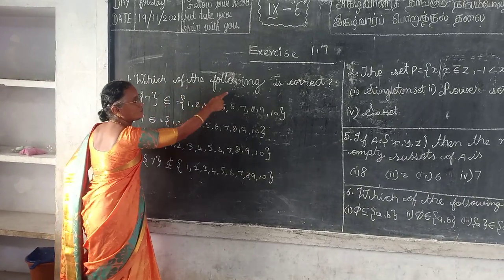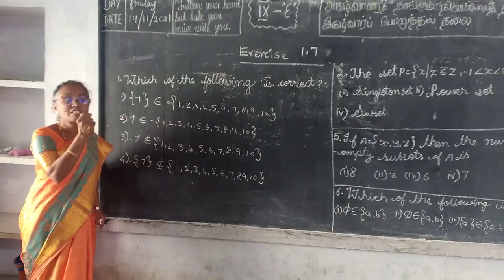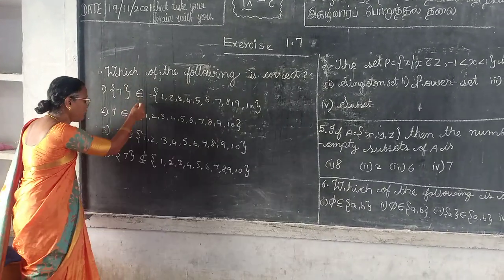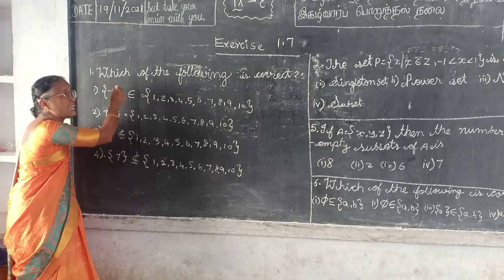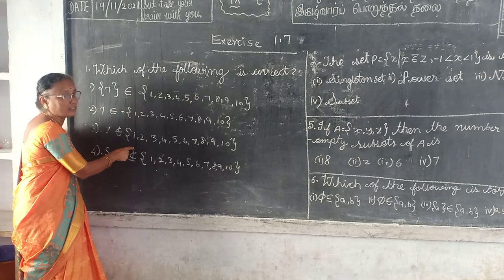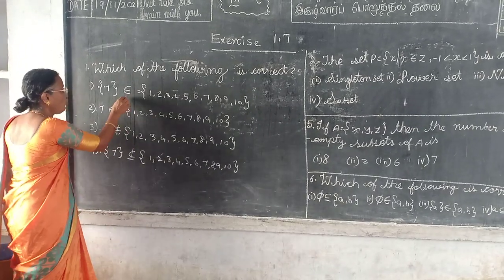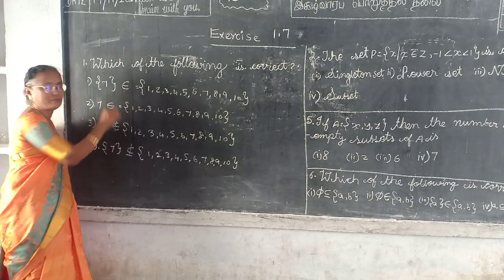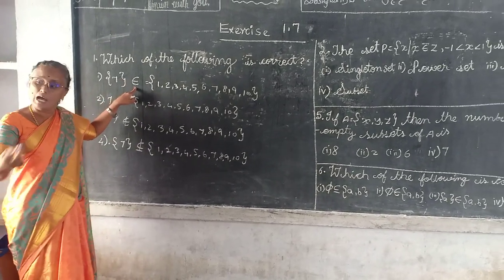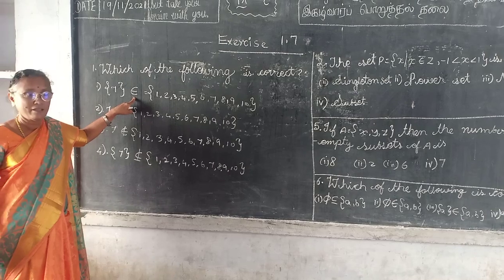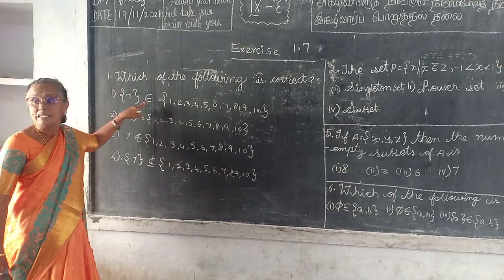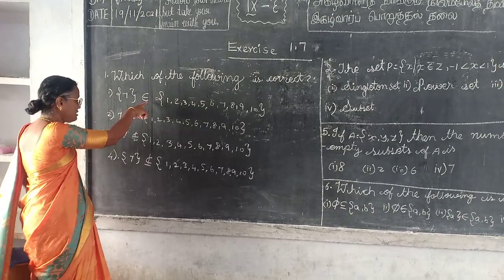Which of the following is correct? They have given four options. What is the name of this symbol? 'Belongs to.' Other name? Element. Very good. This is the element symbol.